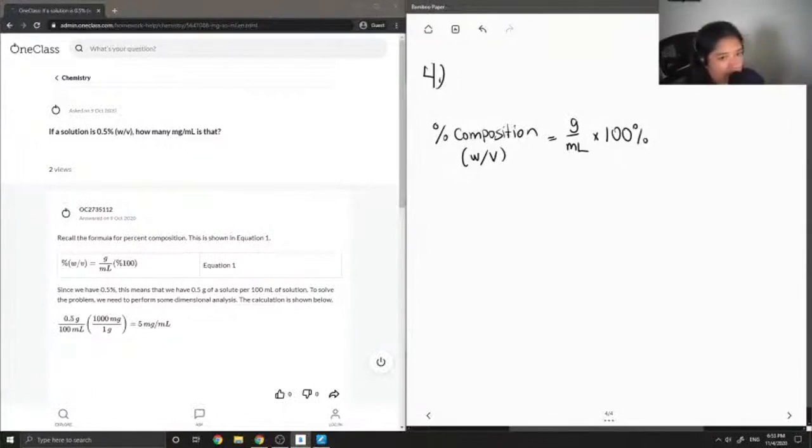So let's look at the question. If we have a 0.5% weight per volume solution, that is the same as saying we have 0.5 grams per 100 milliliters of solution.